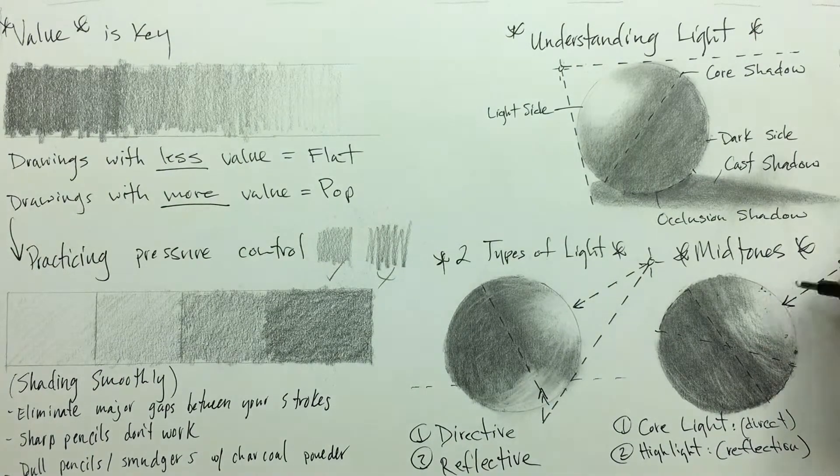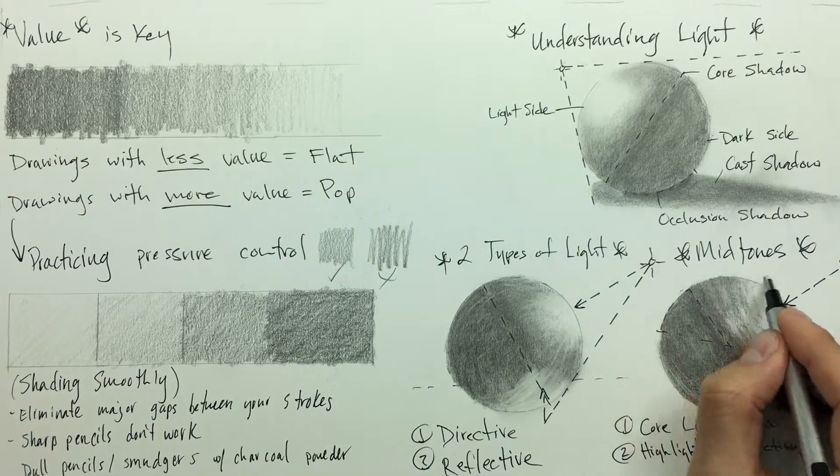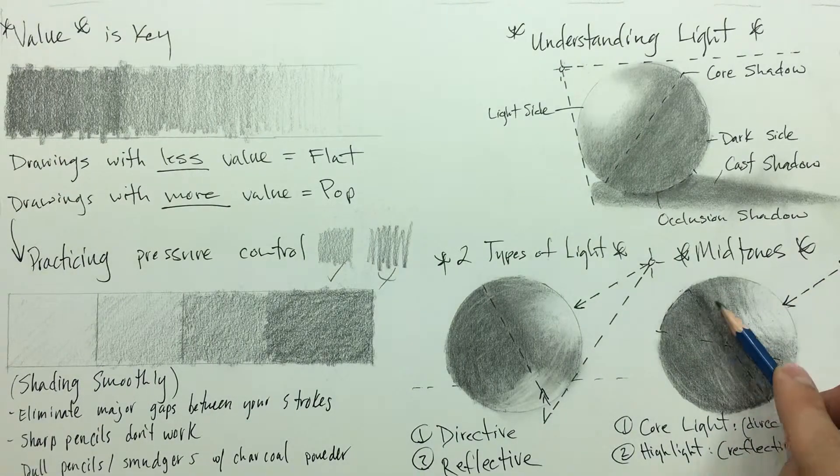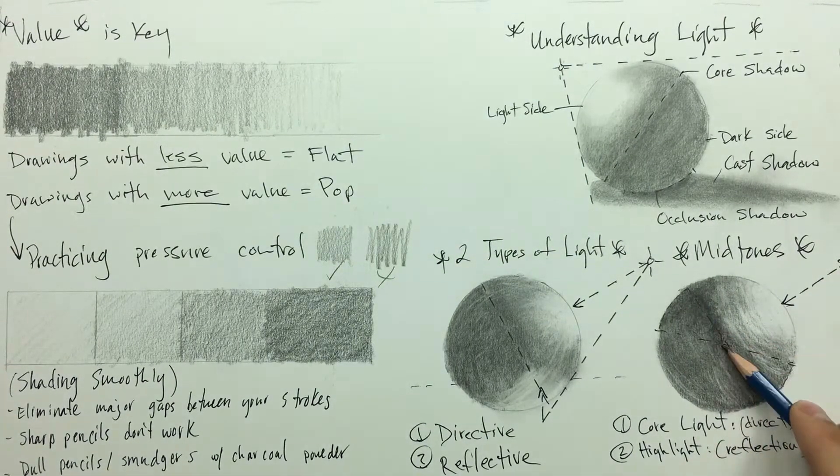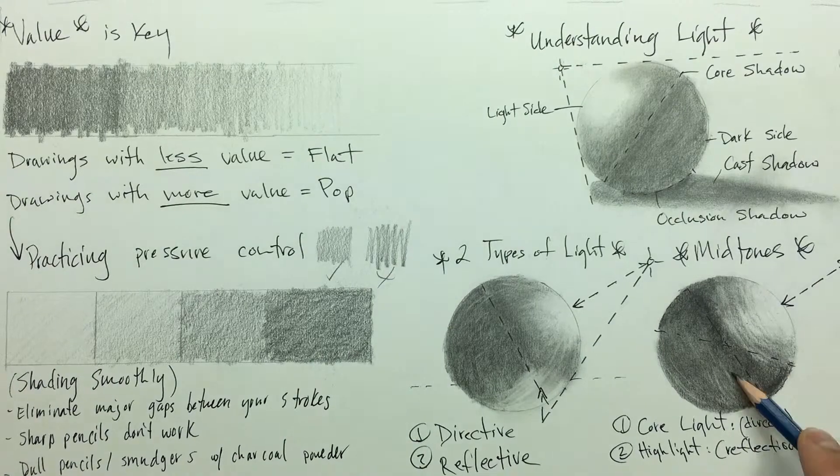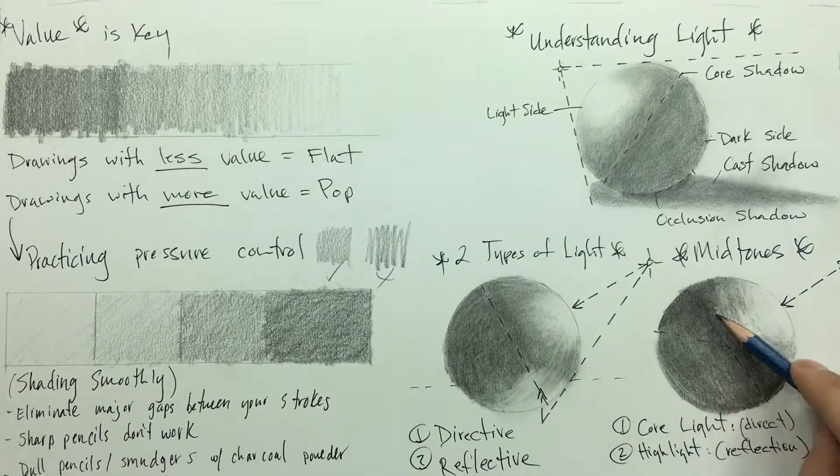But in regards to these midtones, notice how I am keeping to the core shadow first and then I am branching out from there, both working away from the core light and especially towards the core light.